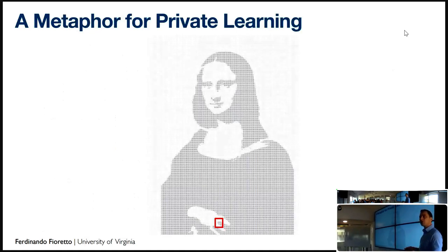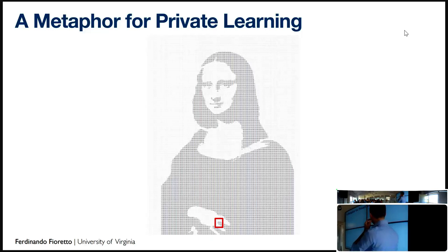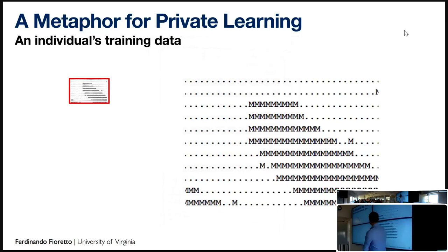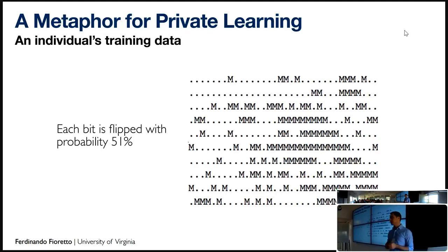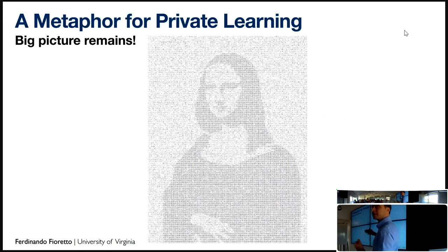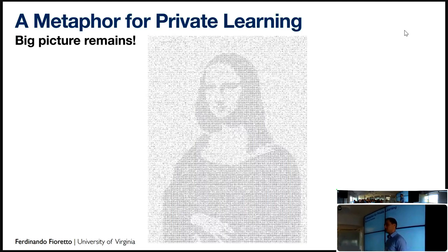To illustrate why randomness works, consider this Mona Lisa example. You have the image as ASCII code. If you randomly perturb the bits with a 51% probability of retaining the original bits, the big picture remains when you put it back together. Despite each single bit now having a probability of being perturbed, you can still do meaningful data analysis, but individual information is masked — you have plausible deniability of whether each single bit was that one or not.